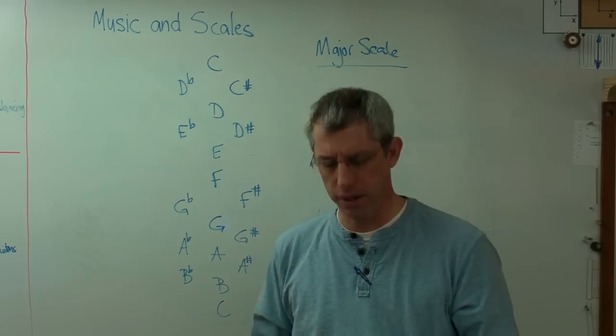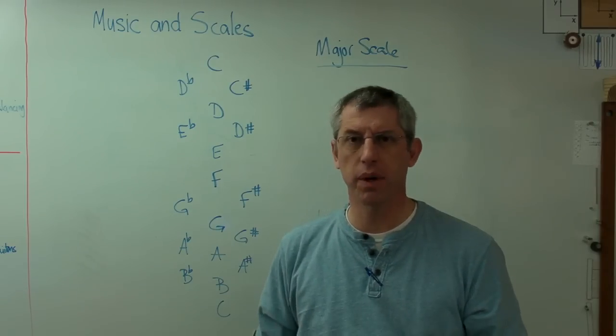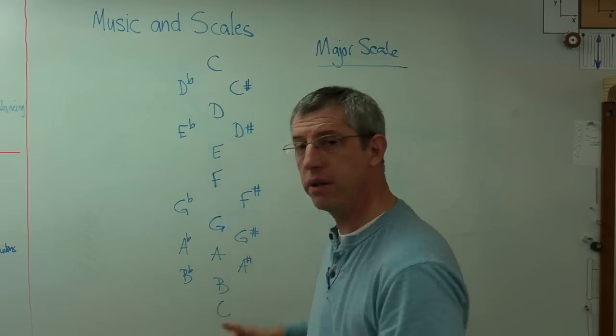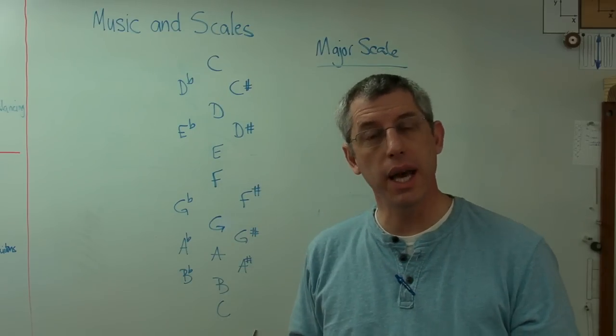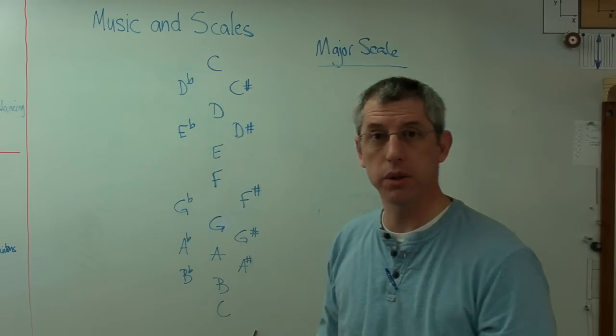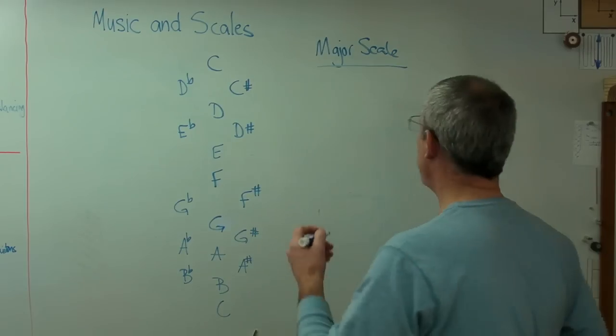But when I go all the way through this list and it starts to repeat itself, that's called an octave. Well, octave suggests eight, doesn't it? An octopus has eight legs. An octagon has eight sides. So an octave means there must be eight notes, but there's twelve possible ones.